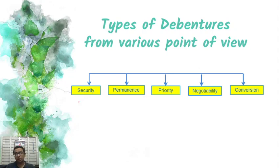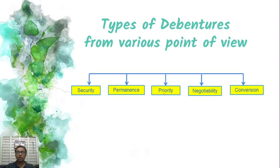Under the security point of view, there are secured debentures and unsecured debentures. From the point of view of permanence, there are permanent debentures and redeemable debentures. From the priority point of view, there are first debentures and second debentures, indicating priority at the time of payment. From the negotiability point of view, there are bearer debentures and registered debentures.